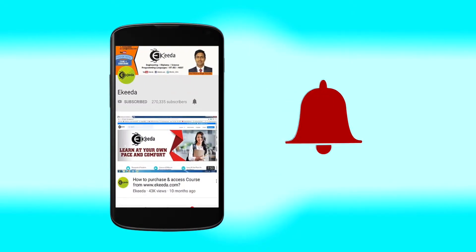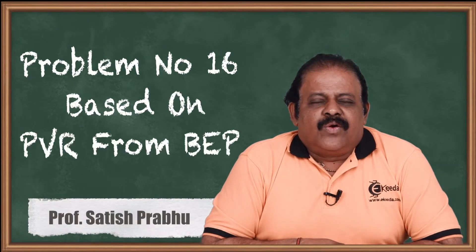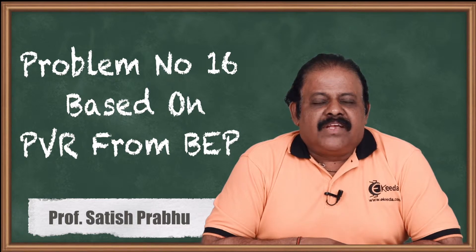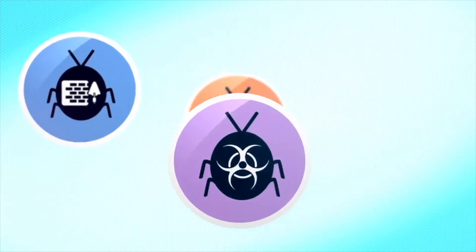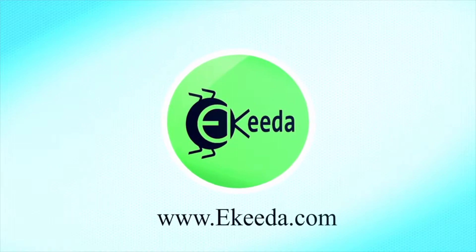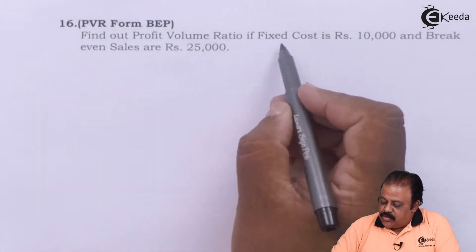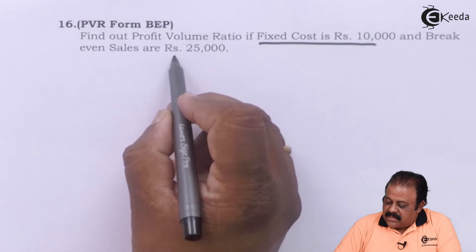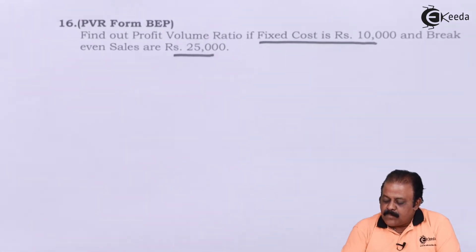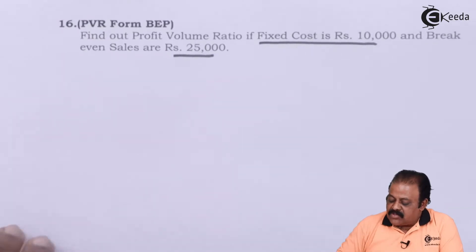Hello friends, we are going to discuss one basic question where we can find out the profit volume ratio based on some information given in the question. Find out the profit volume ratio if fixed cost is rupees 10,000 and breakeven sales are given as 25,000. So we have information of fixed cost and also we have information of breakeven point sales 25,000.